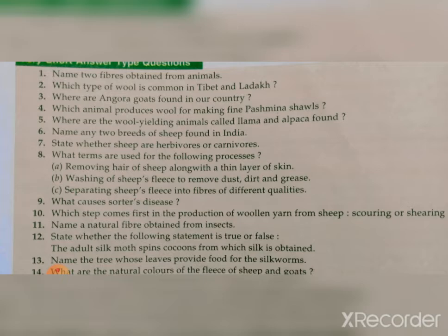Question seven: State whether sheep are herbivores or carnivores. Sheep are herbivores. Question eight: What terms are used for the following processes? First — removing hair of sheep along with a thin layer of skin. That first step is called shearing. Second — washing of sheep's fleece to remove dust, dirt and grease. That is scouring, spelled S-C-O-U-R-I-N-G.